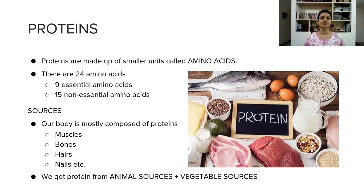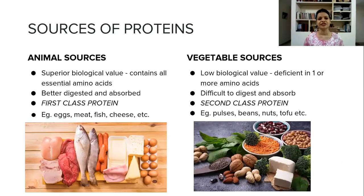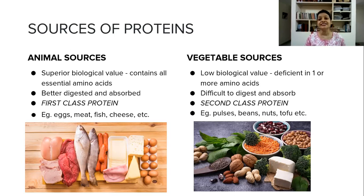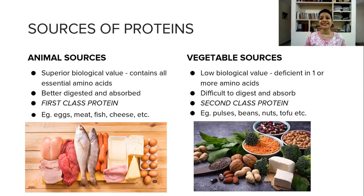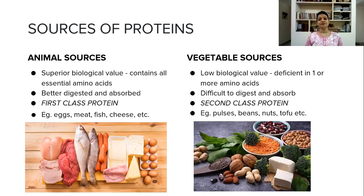Our body is mainly composed of protein — muscles, bones, hair, and nails are all composed of protein. We get protein from two sources: animal source and vegetable source. Animal source is called first class protein because it contains all essential amino acids and is easily digested and absorbed — examples are eggs, meat, and fish. Vegetable sources are called second class protein because they are deficient in one or two amino acids and are difficult to digest and absorb — sources include soybean, pulses, beans, and nuts.